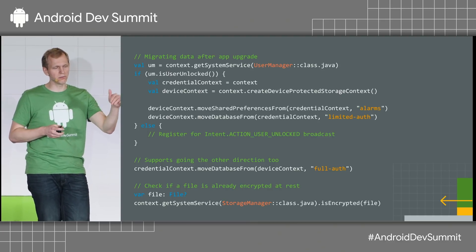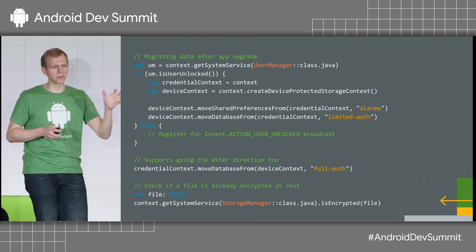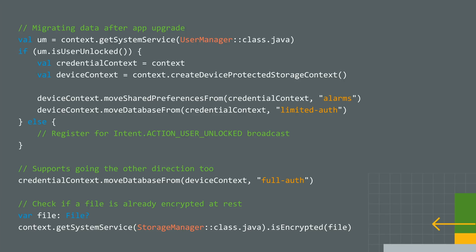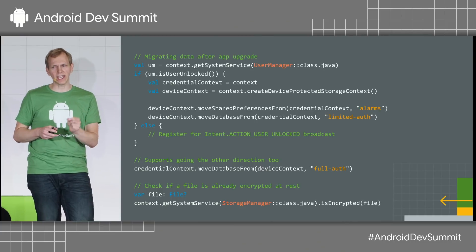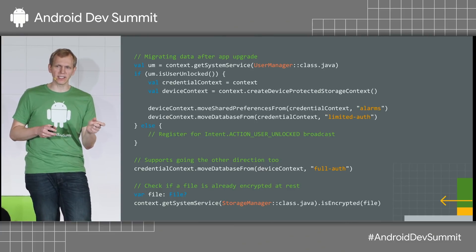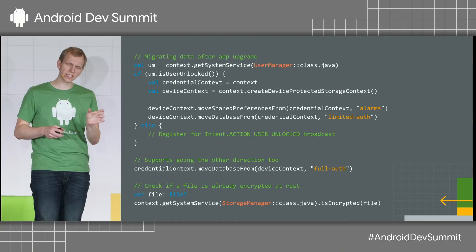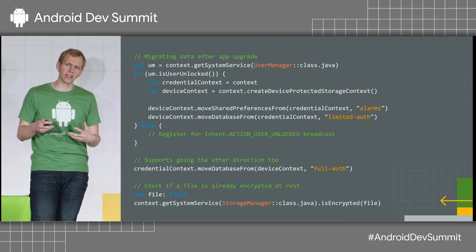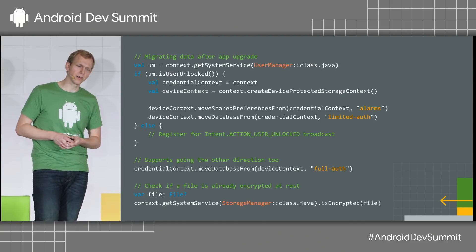There are two helper move methods: you can move shared preferences between two locations, and you can move databases back and forth. The reason we provide these helpers is that shared preferences or databases can be made up of multiple files on disk, and some data may be cached in memory. By calling these helper methods, we ensure all data gets moved and in-memory caches aren't invalidated along the way.